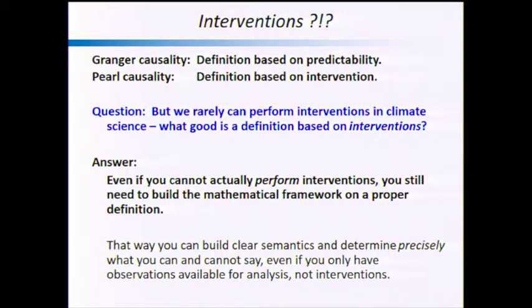If you're not doing interventions anyway, and if you don't really care about model building or causal relationships — you just care about good predictions — you're perfectly fine to use the Granger causality framework. The key point is: if you actually want to build a proper framework, you have to start with a proper intervention definition, and then you can build on that, including this whole framework of causal calculus.